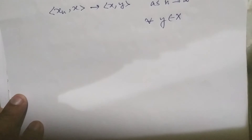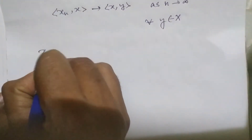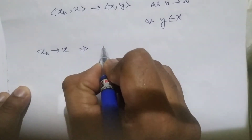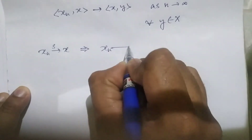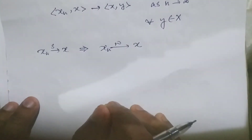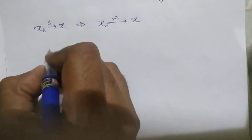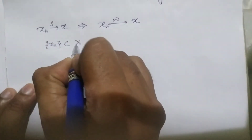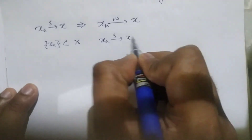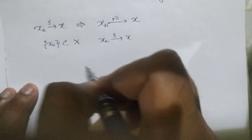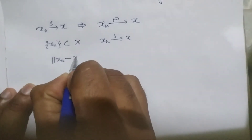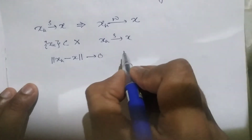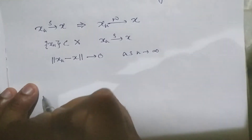Now, the first property: a strongly convergent sequence is weakly convergent to the same limit. So, xn strongly convergent to x in X implies xn is also weakly convergent to x. Suppose xn is strongly convergent to x; by definition, the norm of xn minus x tends to 0 as n tends to infinity.